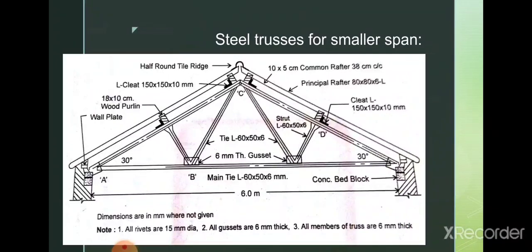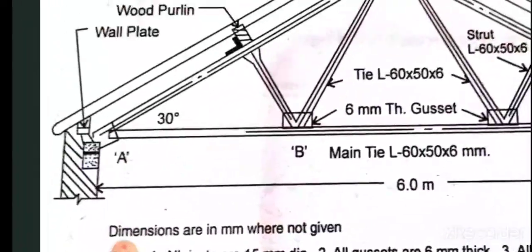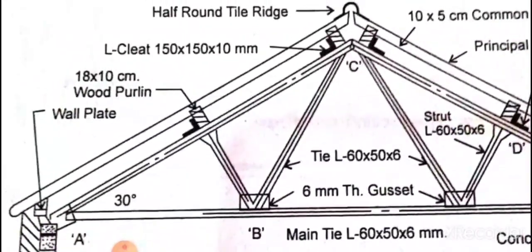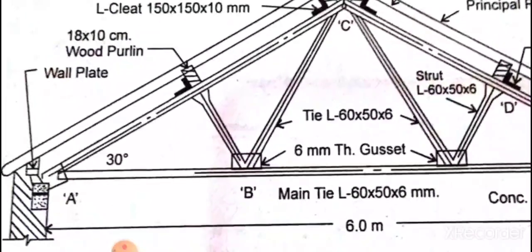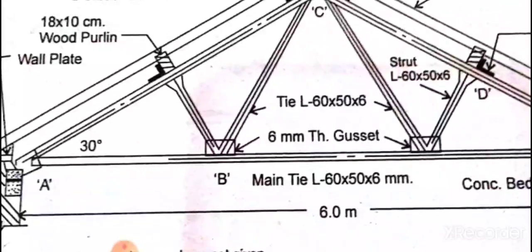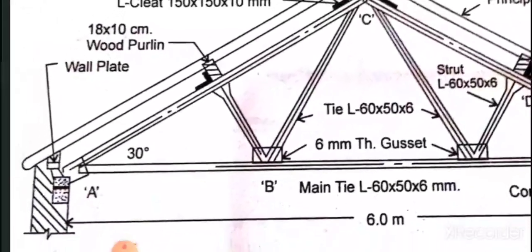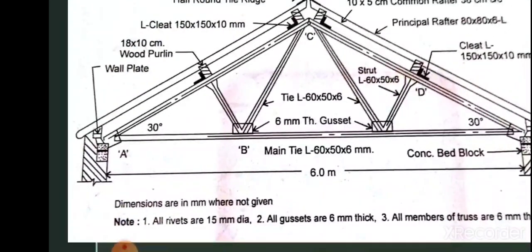Now for steel roof trusses — this is a steel truss for a comparatively smaller span of 6 meters. The different members are joined together by rivet connections, bolted together by means of a plate. For example, at joint B there are three members — the main tie and two inclined members — connected together by one plate called a gusset plate. The six millimeter thick gusset plate holds all three members at joint B together, joined by nuts and bolts.